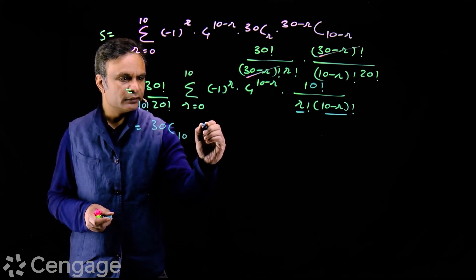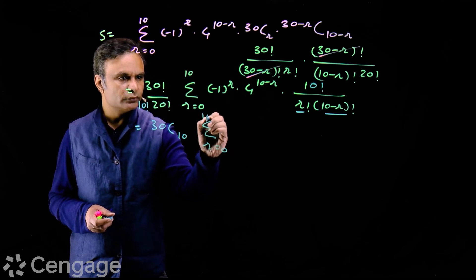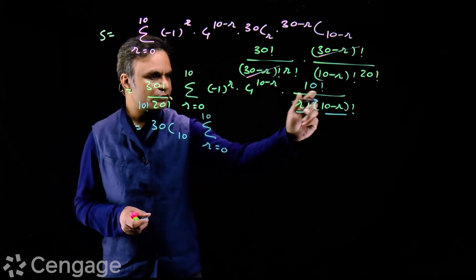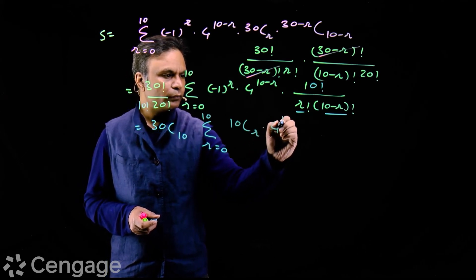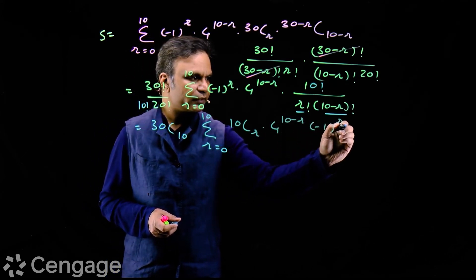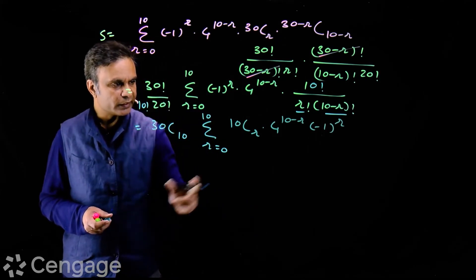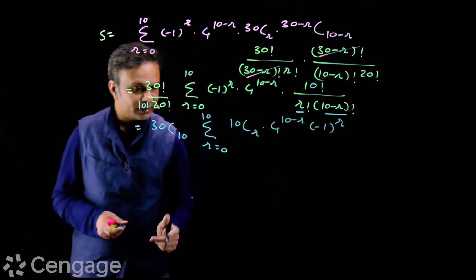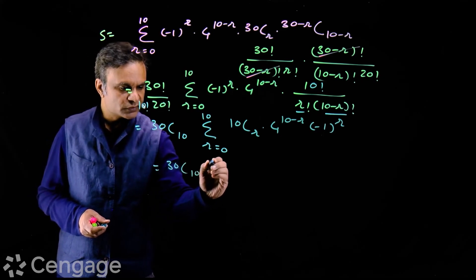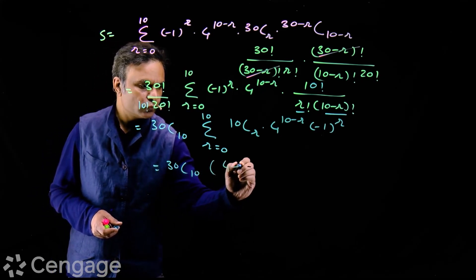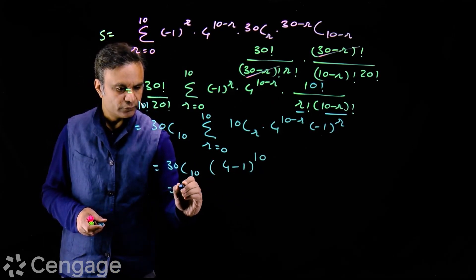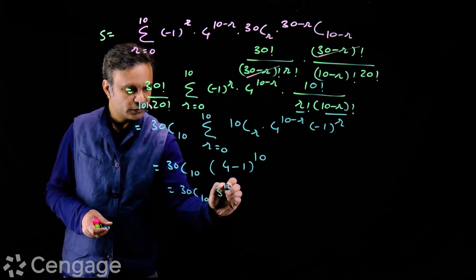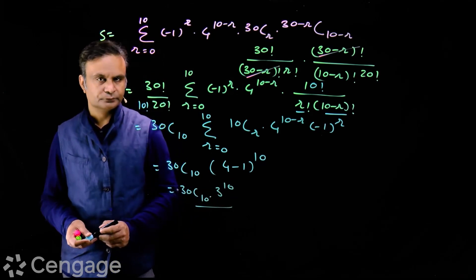So we have 30C10 multiplied by sigma for r equal to 0 to 10 of 10Cr times 4^(10 minus r) times (-1)^r. This sigma is clearly the binomial expansion of (4 minus 1)^10, which equals 3^10. So the final answer is 30C10 multiplied by 3^10.